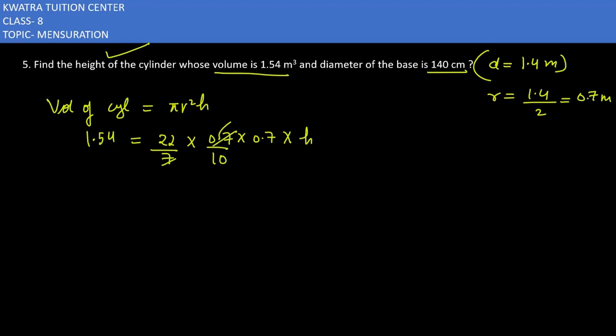Now you interchange the values so you can find the value of h. This 1.4 will come up and 10 will come up, so it will be multiplied with 1.54. Then 22 and 0.7 will come in your denominator. Now you can find the values.